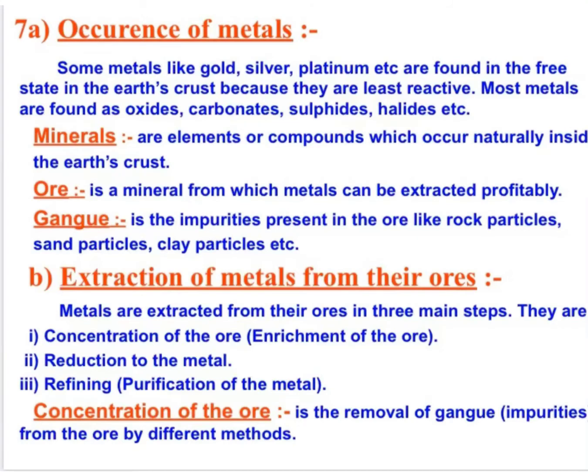Next is the occurrence of metals. Metals are obtained from the earth's crust. Metals like gold, silver, and platinum are found in the free state because they are very less reactive. But most reactive metals are found in the form of oxides — they react with oxygen to form oxides, with carbon to form carbides, with sulfur to form sulfides, and with halogens to form halides.